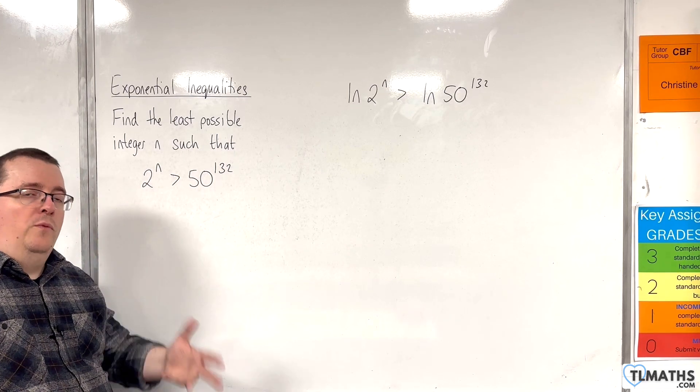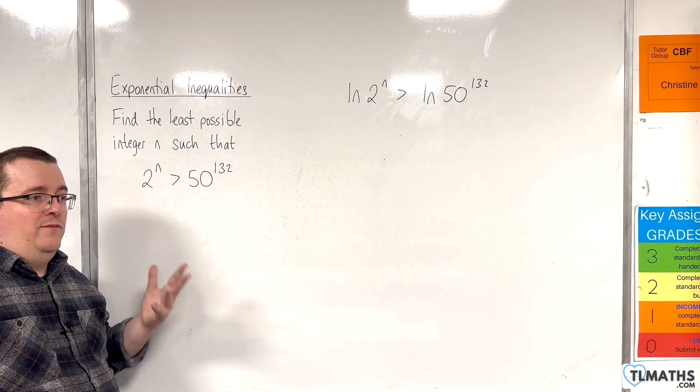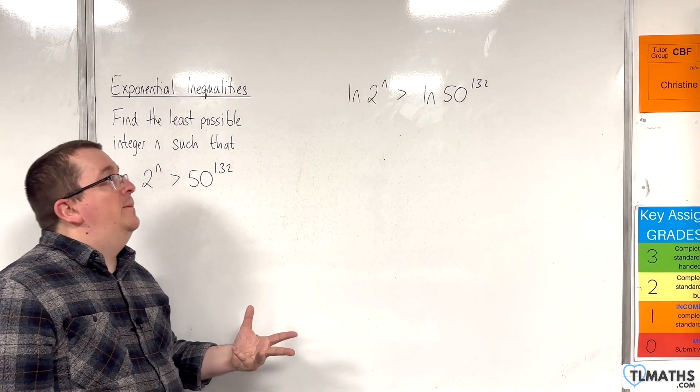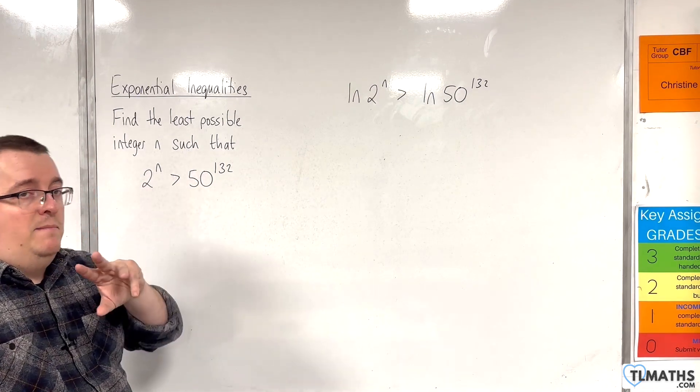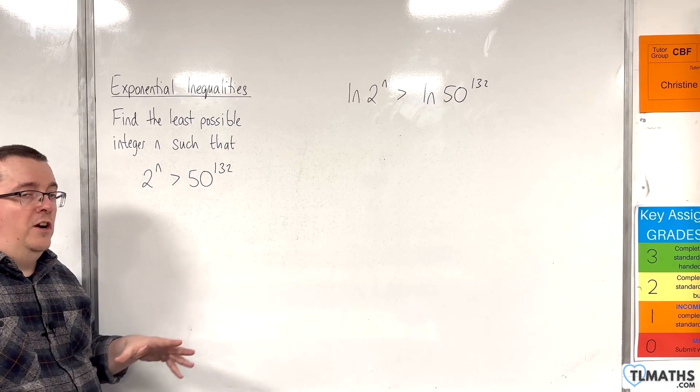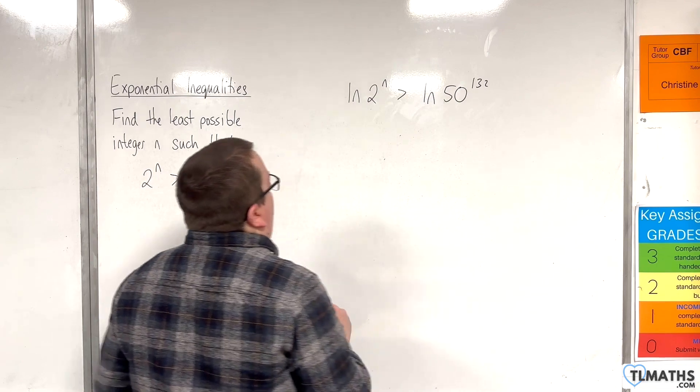Because if you're working with an inequality, multiplying and dividing through by a negative number will cause a problem or will change the direction of the inequality symbol. So, my recommendation is to stick with natural logs for these types of problems. Okay? It causes less issue.